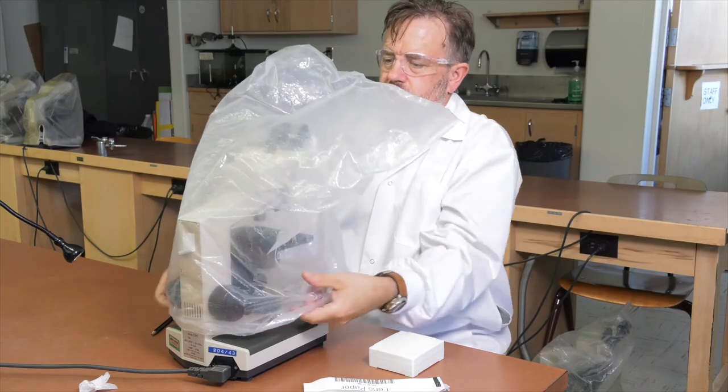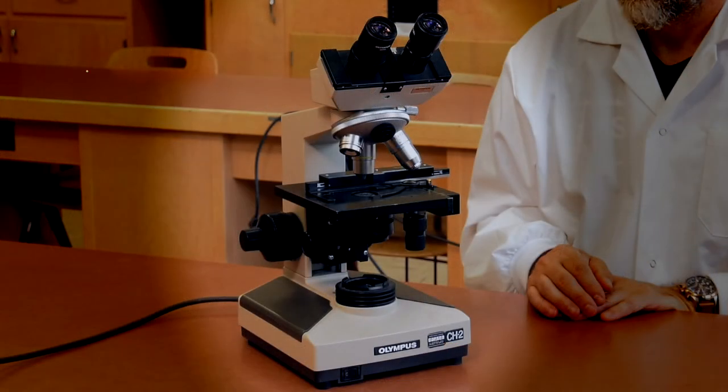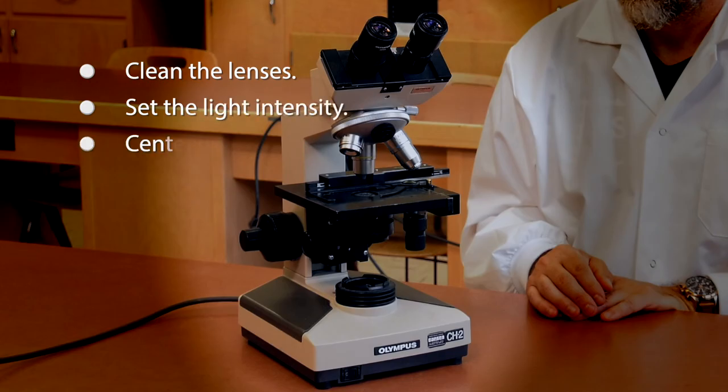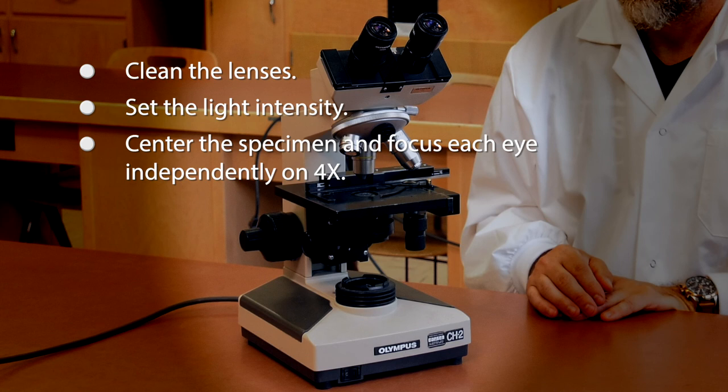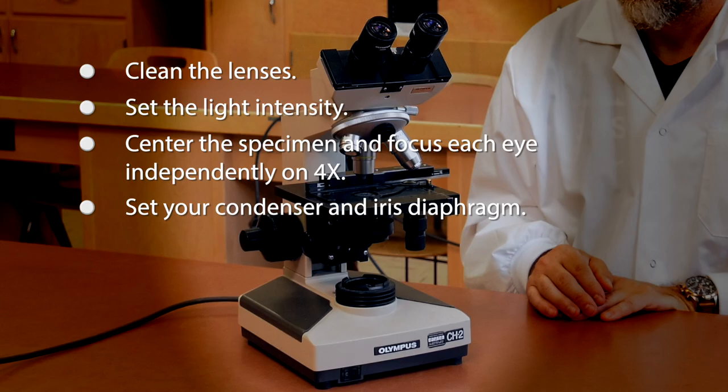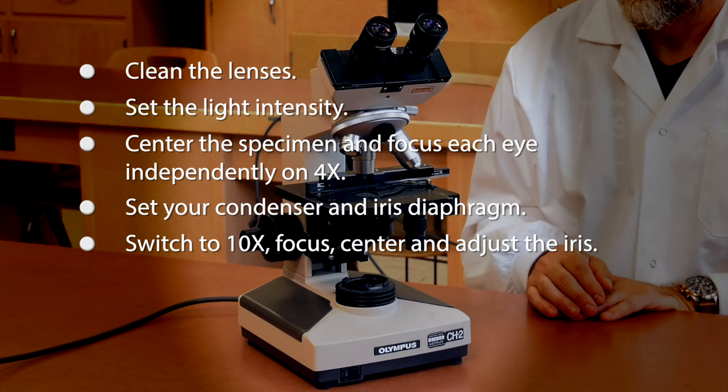A few key points to leave you with. First, clean the lenses. Second, set the light intensity. Third, center the specimen and focus each eye independently on 4x. Fourth, set your condenser and iris diaphragm. Fifth, switch to 10x, focus, center, and adjust the iris. And finally, switch to 40x, focus, center, and adjust the iris.